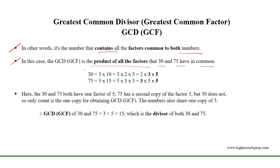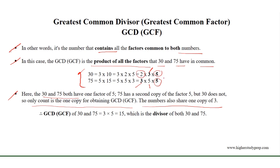If we take the factors of 30 and 75, we can see that both 30 and 75 have one factor of 5, but 75 has a second copy of 5 while 30 does not. So only count one copy for obtaining the greatest common factor. The numbers also share one copy of 3. We cannot consider 2 because 30 has one copy of 2 but 75 does not. So the greatest common divisor of 30 and 75 equals 3 times 5, which equals 15, which is the divisor of both 30 and 75.